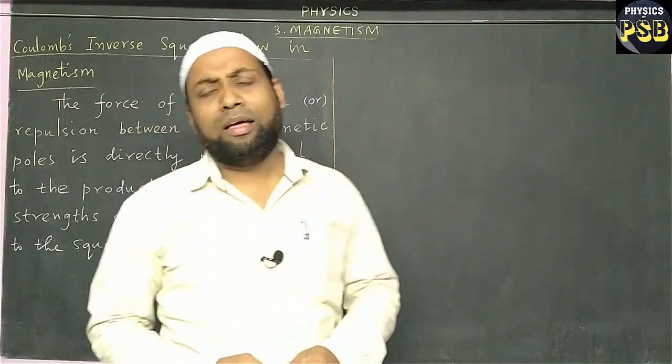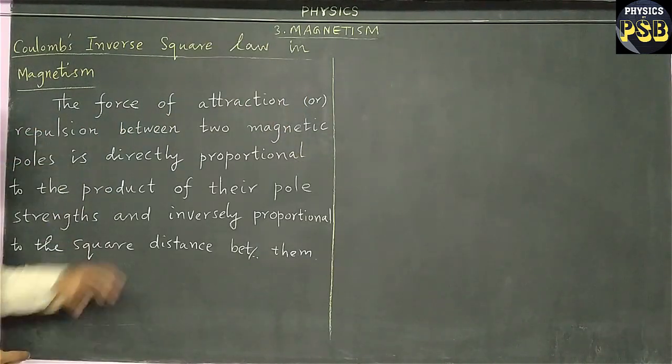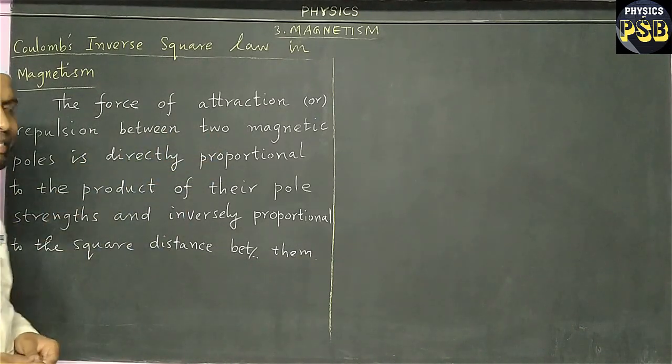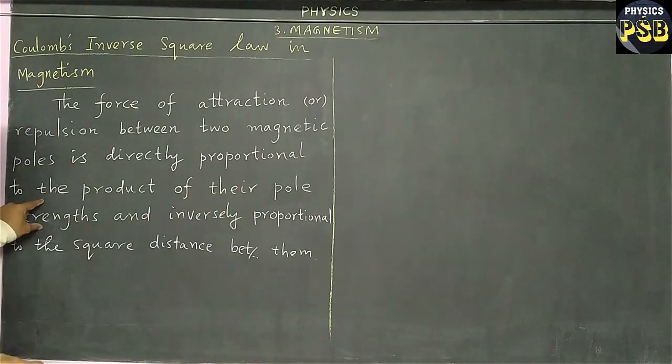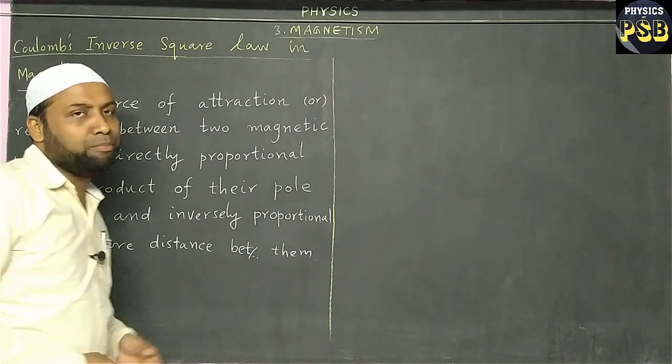Let me tell you what Coulomb's law in magnetism says. It says that the force of attraction or repulsion between two magnetic poles is directly proportional to the product of their pole strength and inversely proportional to the square of distance between them.